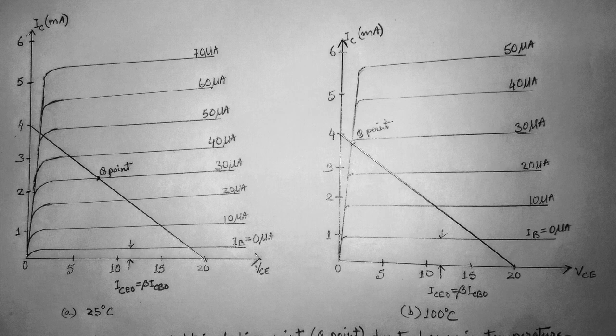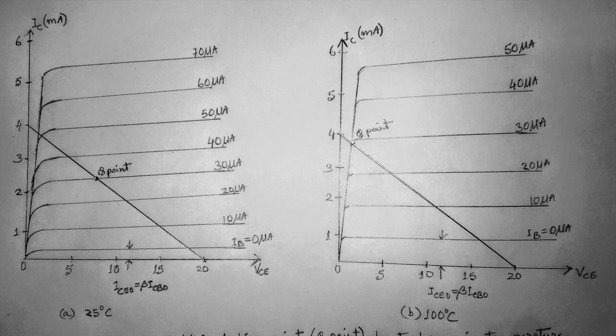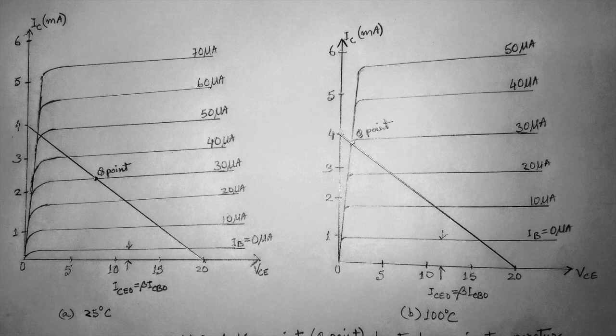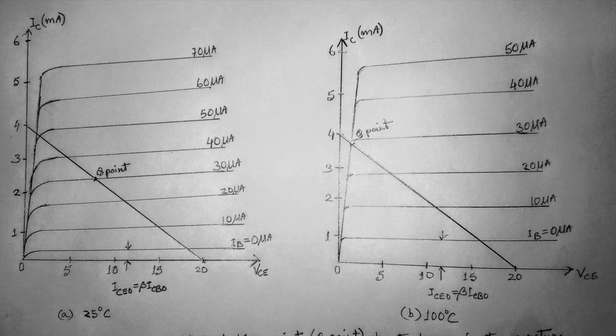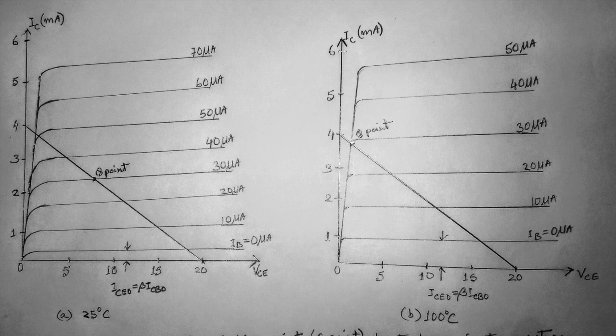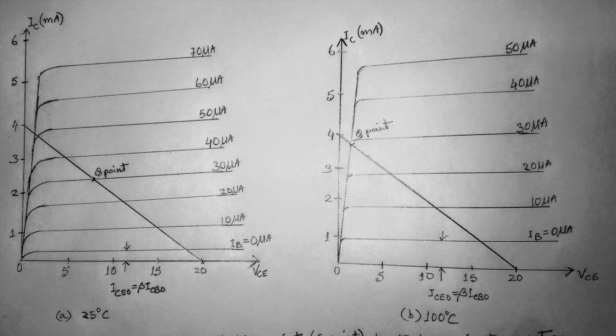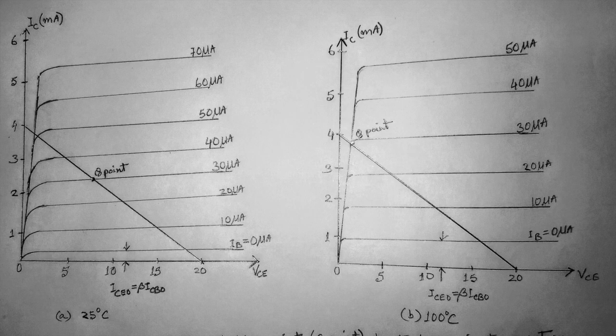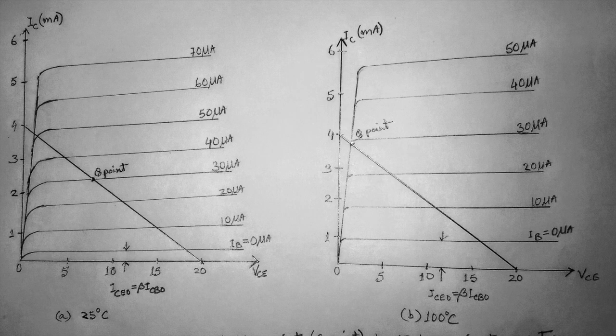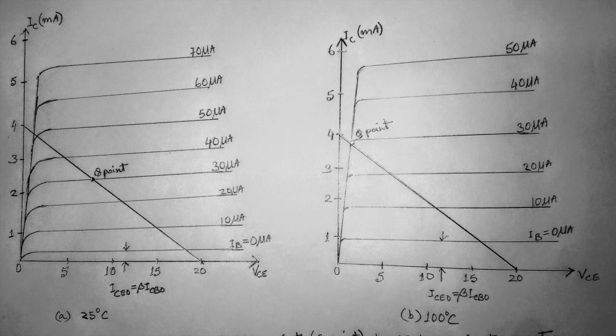In the extreme, the transistor could be driven into saturation. In any case, the new operating point may not be at all satisfactory, and considerable distortion may result because of the point shift. A better circuit is one that will stabilize or maintain the DC bias which was initially set, so that the amplifier can be used in changing temperature environment.